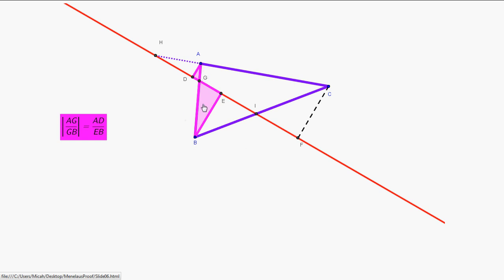So, our ratio of division, AG over GB, at least when you ignore the sign related to being a ratio of division, that has to be equal to AD over EB.